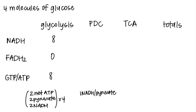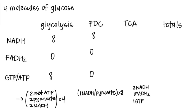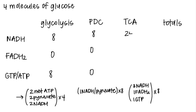Normally in the PDC we make one NADH per pyruvate, but because we have four glucose molecules we have eight pyruvates, so we multiply by eight. We make eight NADH, zero FADH2, and zero GTP in the PDC. Normally with one turn of the TCA cycle we make three NADH, one FADH2, and one GTP. Since those eight pyruvates produced by glycolysis turned into eight acetyl-CoAs by the PDC, we multiply the products of the TCA by eight as well, giving us 24 NADH, eight FADH2, and eight GTP.